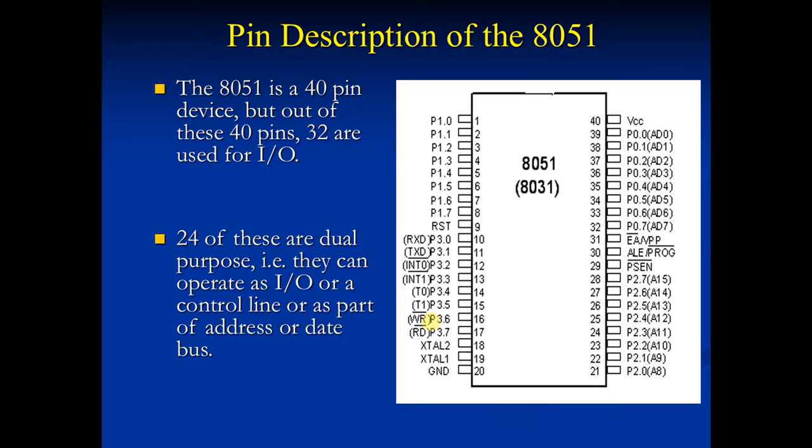As you can see, there are 40 pins in 8051 IC, in which 32 pins are used for I/O. These 32 pins are allocated to port 0, 1, 2, and 3. These are the 4 ports, each port has 8 pins.